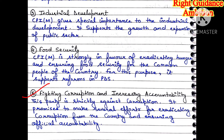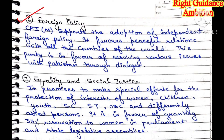Fifth, fighting corruption and increasing accountability. This party is strictly against corruption and says special efforts should be made to combat it. Accountability means that the government is answerable and transparent to the people. Sixth, India should maintain peaceful relations with all countries of the world, and any issues should be resolved through dialogue at the table rather than through war.